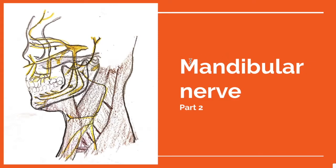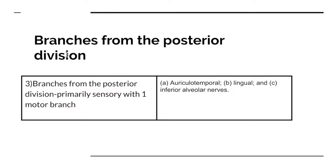Let's continue talking about the mandibular nerve. In the previous video we talked about the branches from the main trunk and from the anterior division. Now the branches from the posterior division are the auriculotemporal nerve, lingual, and the inferior alveolar nerve.